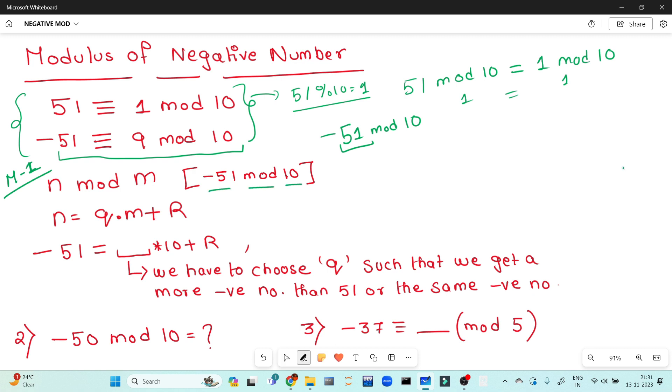Using the arithmetic formula, we can represent any number as n equals q times m plus r, where n is the dividend, m is the divisor, q is the quotient, and r is the remainder. For minus 51, we need to express it in this formation: minus 51 equals q times m plus r.